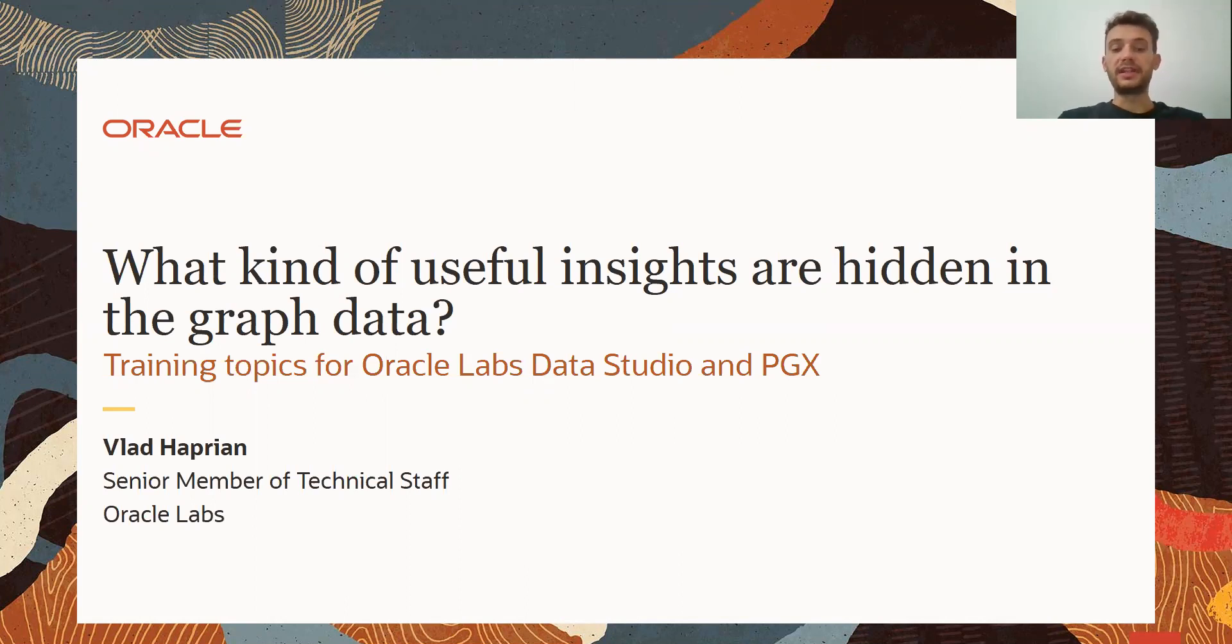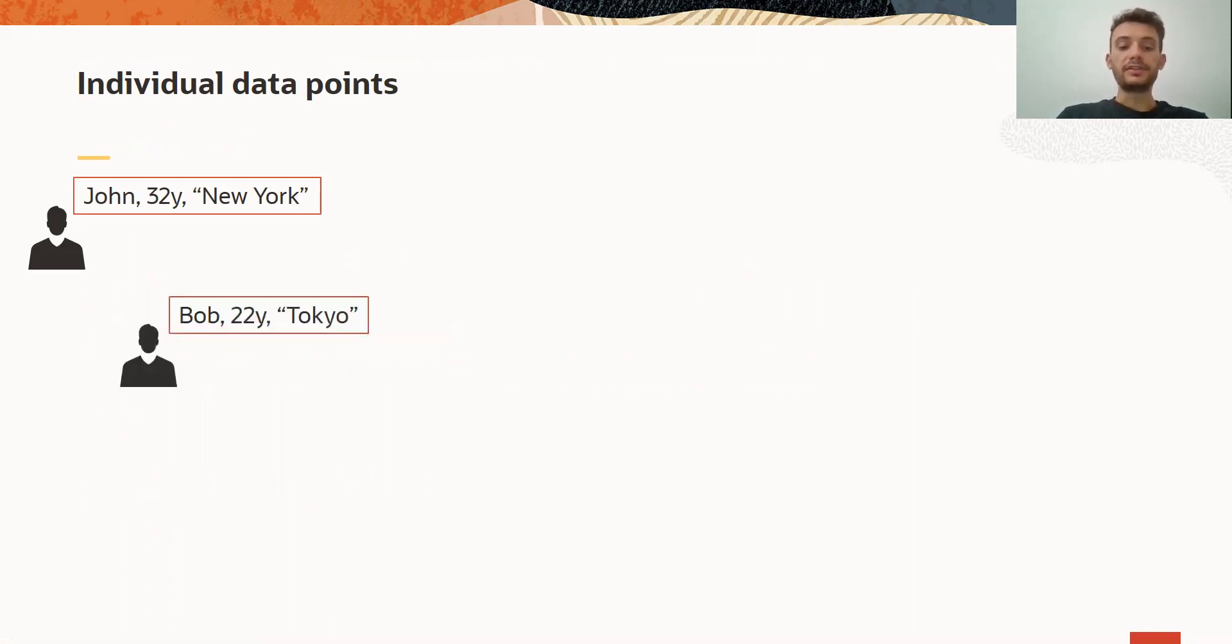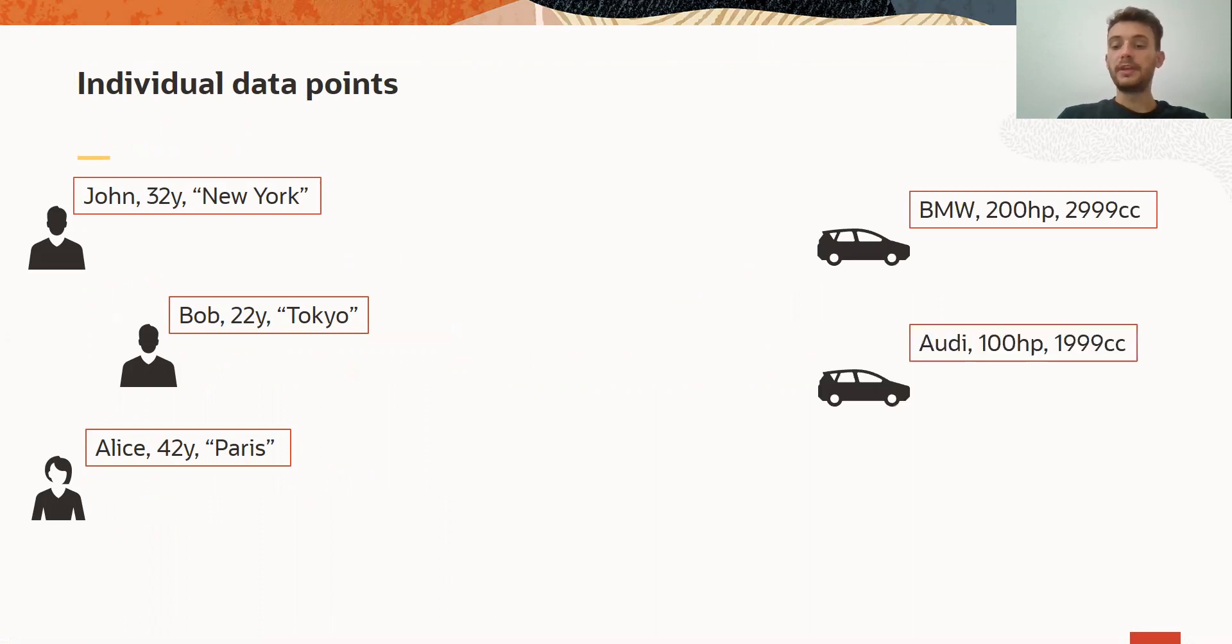So in order to understand what kind of useful insights are hidden in the graph data, let us start with a simple example. Let's consider we have an individual set of data points. For example, we have a person, John, 32 years old, living in New York, Bob, 22 years old, coming from Tokyo, and Alice, 42 years old, coming from Paris. In addition to these points, we have a set of cars: BMW, an Audi, and a Lexus.